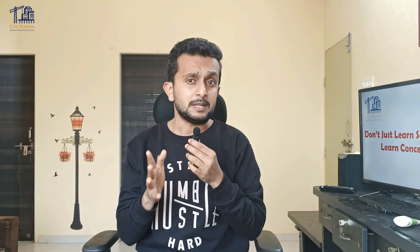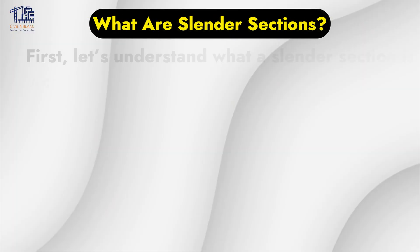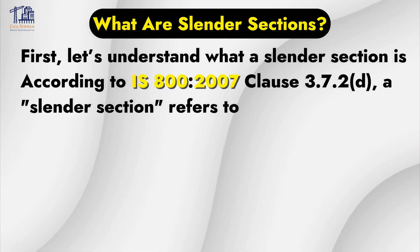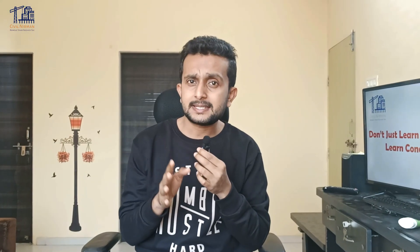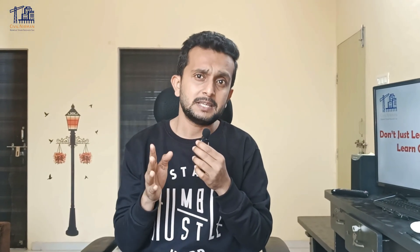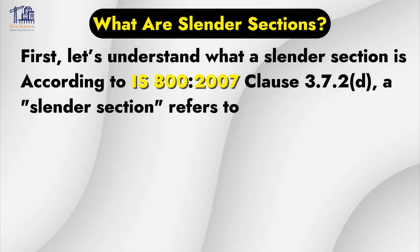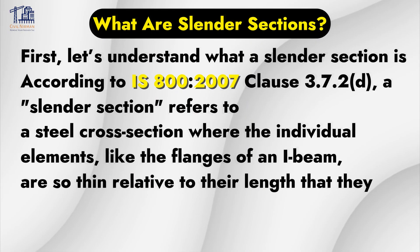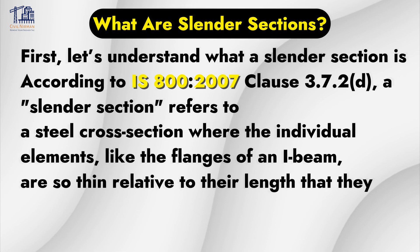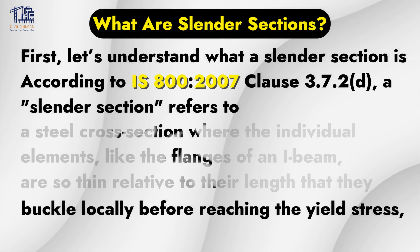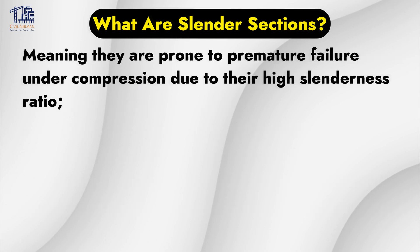For beginners, let me briefly explain what slender sections are. According to IS-800-2007 clause 3.7.2, a slender section refers to a steel cross-section where the individual elements — like the flanges of an I-beam — are so thin relative to their length that they buckle locally before reaching the yield stress, meaning they are prone to premature failure under compression due to their high slenderness ratio.